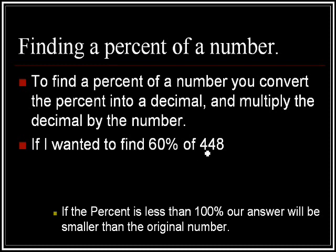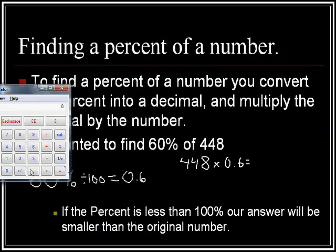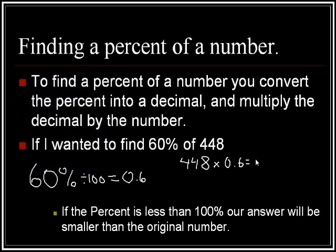For example, if I wanted to find 60% of 448, I would divide 60 by 100 to get 0.6. That's our decimal. My second step is to multiply the decimal by the number: 448 times 0.6. Using the calculator, that's 448 times 0.6 equals 268.8. So my answer is 268.8. That's pretty straightforward.